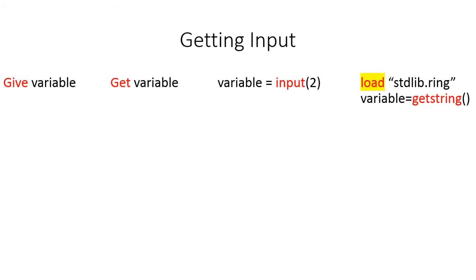Similarly for input, you can use different commands to get input from the keyboard. There are four methods: 'give' followed by a variable name, or 'variable = input(length)' where you specify the length of input. You can also use 'getstring', but you must load 'stdlib.ring' for that command since it is stored in that file.